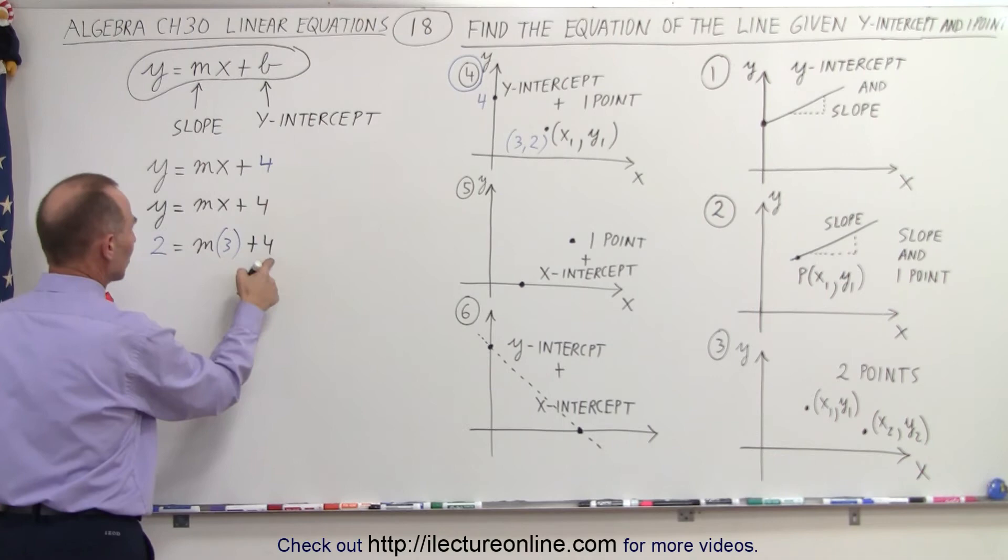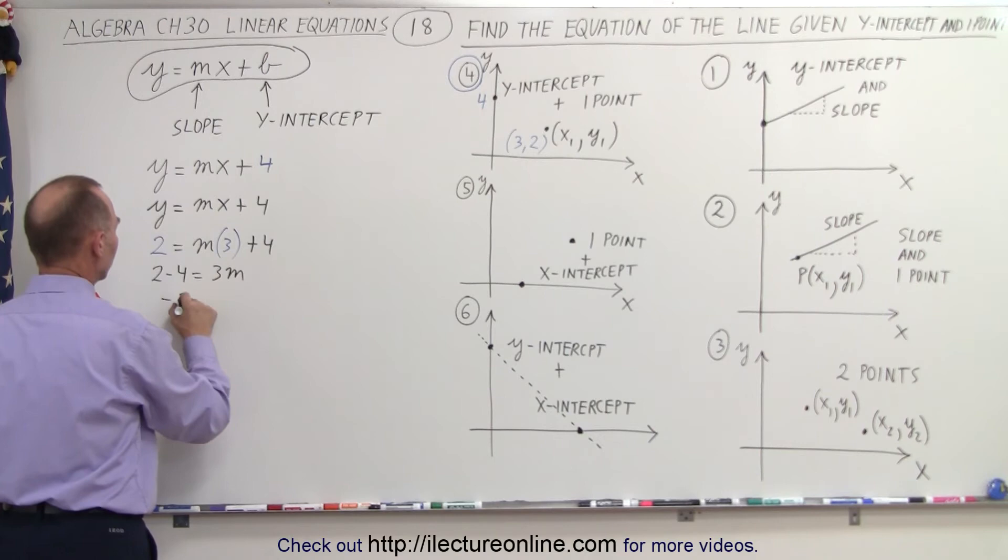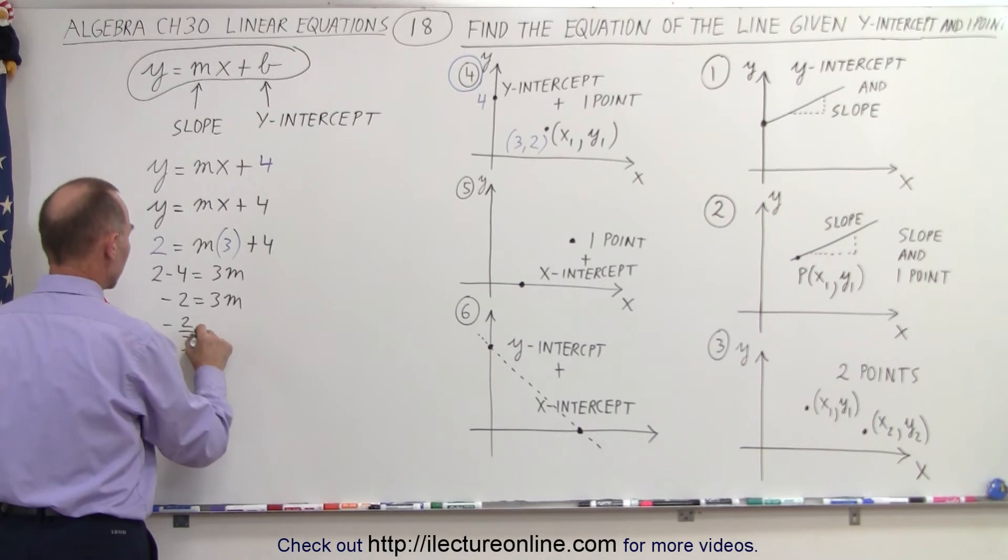And now we can use this, we can solve this equation to find the value for m. So first we move the 4 to the other side. So we have 2 minus 4 equals 3m, minus 2 equals 3m. Divide both sides by 3, so you'll get negative 2 over 3 equals m.